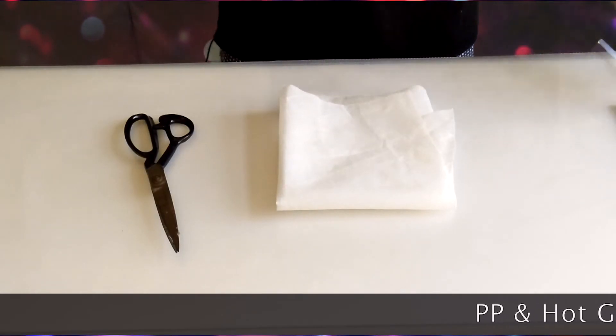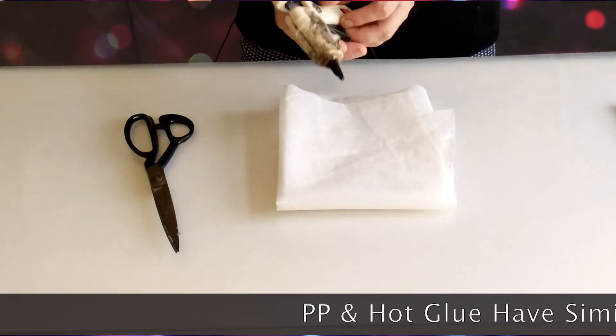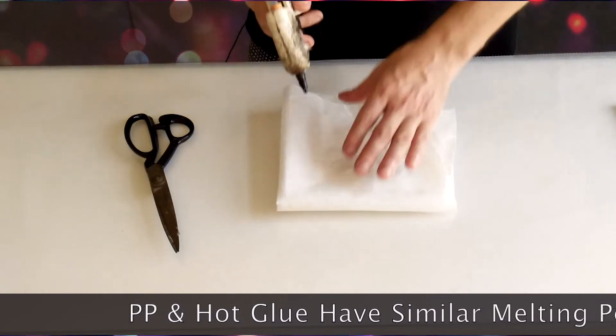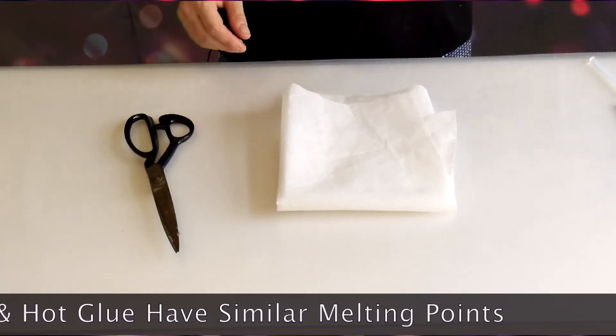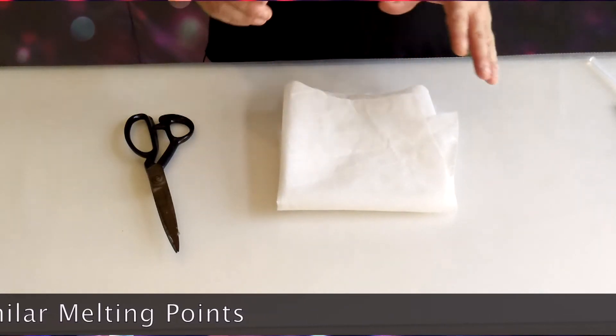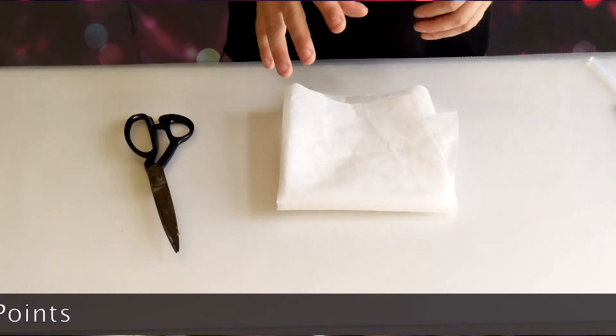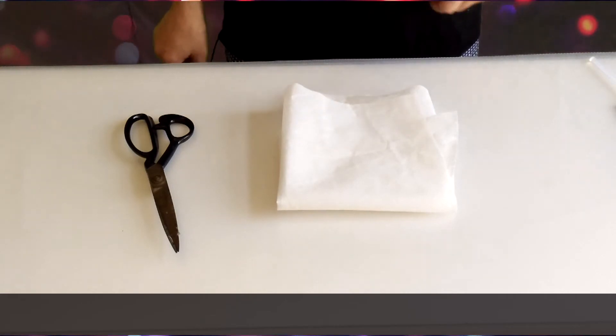Another tip. You don't want the glue gun to get too hot. You want to use it continuously. Don't linger anywhere because the melting point of the glue and the fabric are very similar and you'll burn a hole right through it if your glue gun gets too hot.